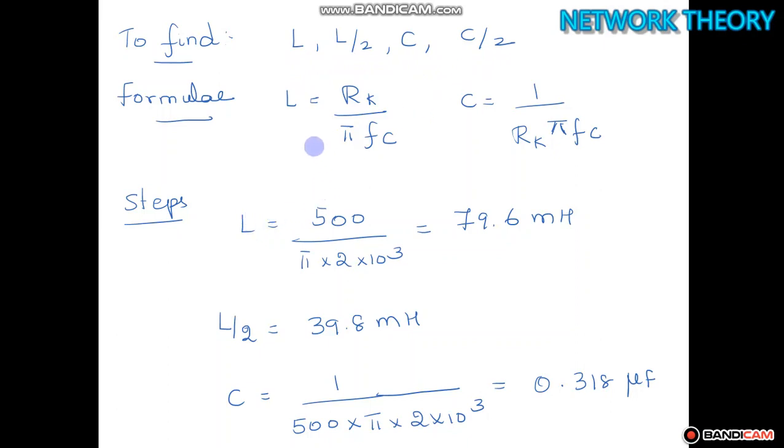So substitute the values in the formula. L is equal to 500 by 2 into pi into 10 power 3 which is equivalent to 79.6 millihenry. Always represent L in terms of millihenry and find out L by 2 which is 39.8 millihenry.